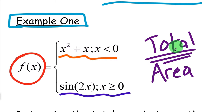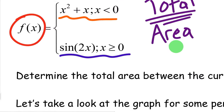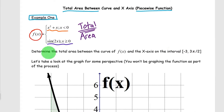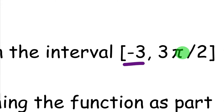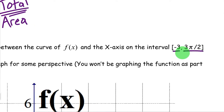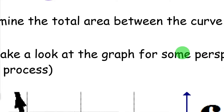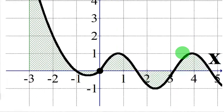Fortunately, it's not as confusing as it might seem. It says: determine the total area between the curve of f(x) and the x-axis on the interval. This interval is important — we want to go from negative 3 to 3π/2. You really can't find an area or definite integral unless you're dealing with an interval. Let's take a look at the graph for some perspective. You won't be graphing the function as part of the process, but it does help to look at the graph.